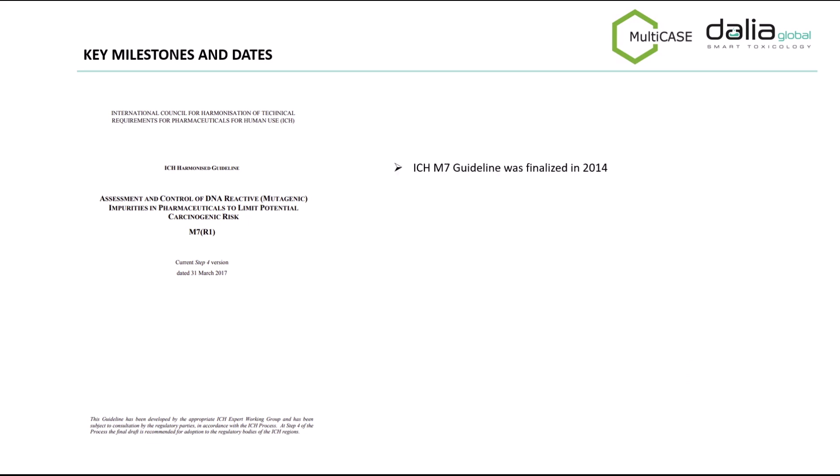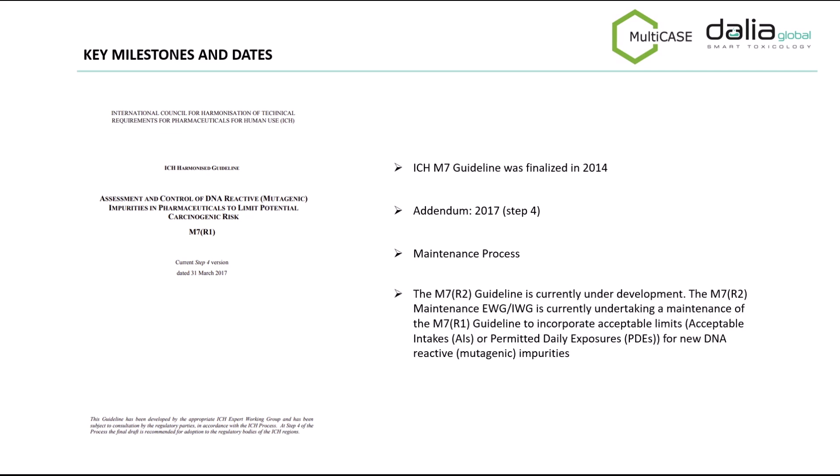The M7 guideline was adopted by ICH in 2014 and the first addendum was released three years later. A maintenance process is currently being done to incorporate acceptable limits such as PDEs or acceptable intakes for new mutagenic impurities. Furthermore, a question and answer document has been developed to clarify some quality and safety aspects and concerns identified through the implementation of the M7 guideline. This Q&A document was published in June 2020 and contains additional clarification to some aspects which led to variable interpretation by stakeholders.